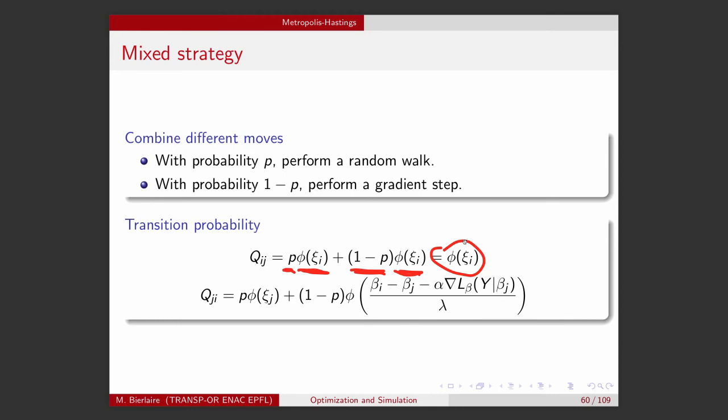So in this case, we have again the same probabilities for the random walk. And for the backward, we have again the random walk. And with probability 1 minus p, we have this backward probability for the gradient-based approach that we have derived before. So it's extremely simple. I have tried it.